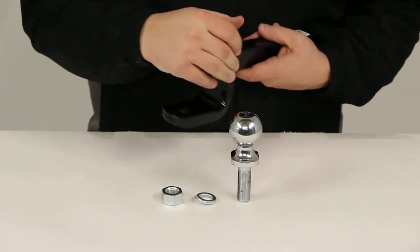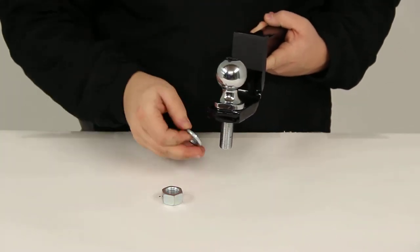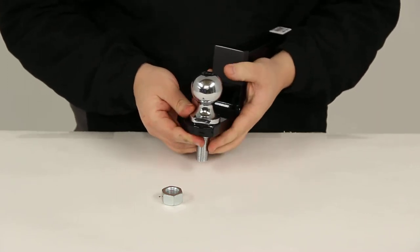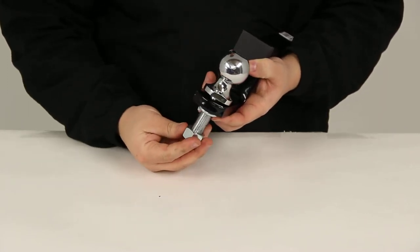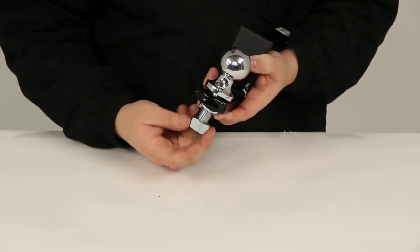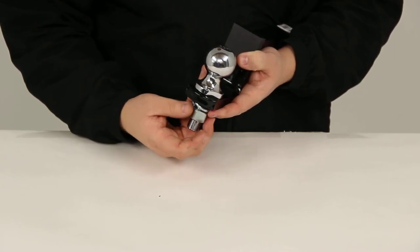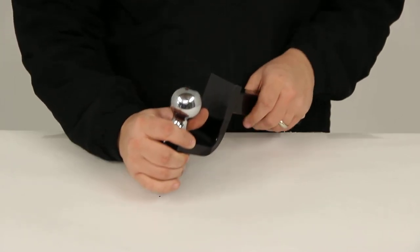So the way this would work is you would take your hitch ball, place it onto the ball mount, put the lock washer on, and then you would thread on your nut. Then all you would need to do is torque it down to the specifications listed by the manufacturer.